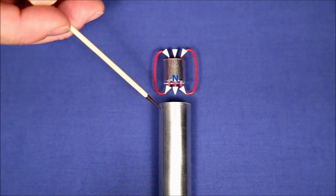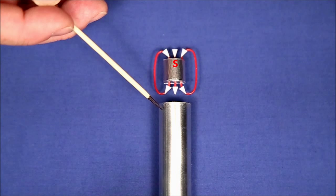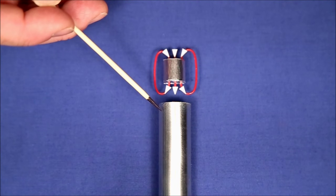The reason the magnet falls slowly down a conducting tube is because of Lenz's Law, which states that any time a conductor experiences a changing magnetic field, a current will be induced in the conductor, which will in turn produce a secondary magnetic field so oriented as to resist the change in the magnetic field through the conductor.